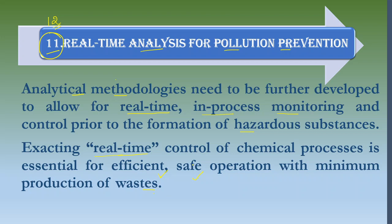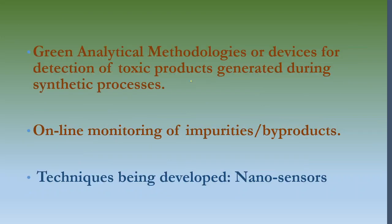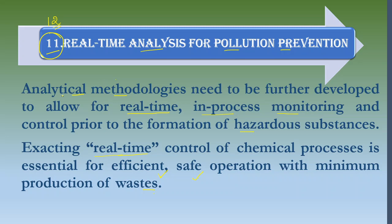For example, your process may produce toxic products. During the process, if a toxic product is being made, you want to check that. For that, you have to do online monitoring of impurities or byproducts — you take samples and check whether the byproduct is toxic or not. The tool used for this is a nanosensor. So in this 11th principle, we use an analytical method or tool to monitor the in-process throughout the entire reaction.